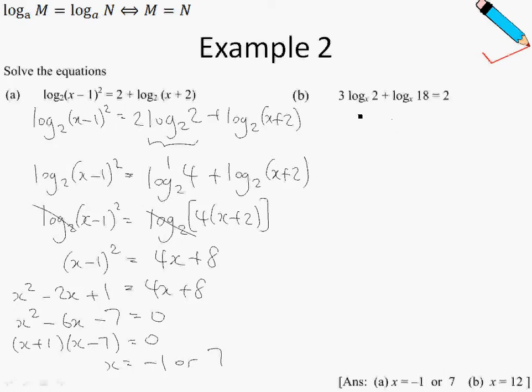Example 2b. So similar trick, I will shift this 3 over to become the power of 2. So this becomes 2 to the power of 3, which is just 8. And log_x 18 equals to 2. And 2 can be written as 2 times log base x, x. Why do I do this? Because I want to make all the bases log_x in this example.